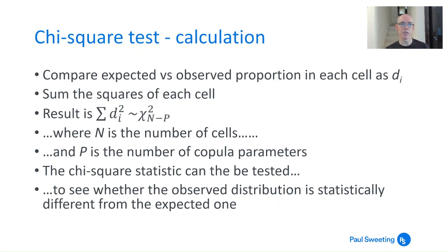So you compare the expected versus the observed portion of observations in each cell, you sum the squares of each cell, and the result is sigma d_i squared, and that's got a chi-squared distribution with n minus p degrees of freedom, where n is the number of cells, so in this case 100, and p is the number of copula parameters that you've got. So when you calculate this statistic, when you're looking at that sigma d_i squared, it's kind of like a sort of root mean squared type of thing, so the smaller that is the better. But you can usually get a better fit by adding more parameters, so that chi-squared statistic allows you to test whether a particular copula that you're using, which maybe has a high number of parameters that you're putting in, is actually genuinely better or not.